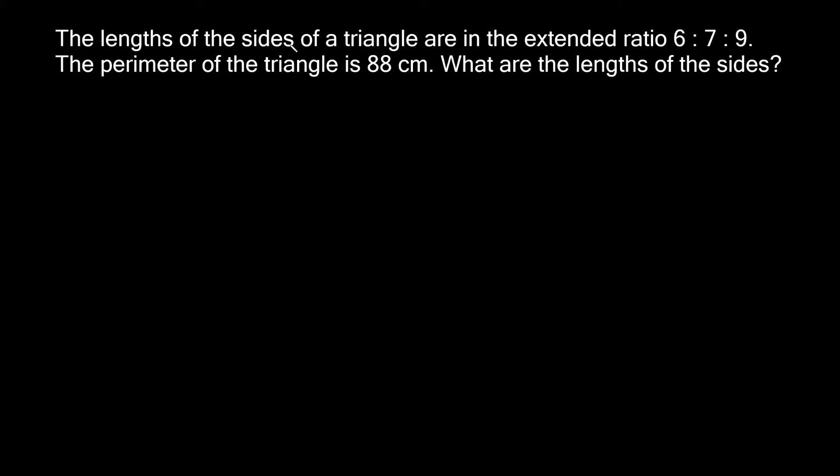So it says the lengths of the sides of a triangle are in the extended ratio 6, 7, 9. The perimeter of the triangle is 88 centimeters. What are the lengths of the sides?